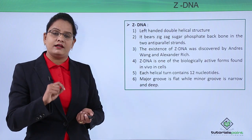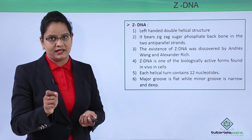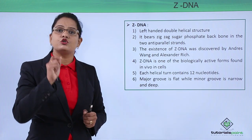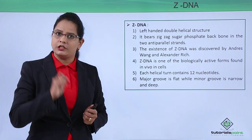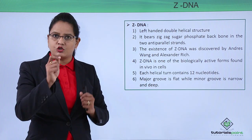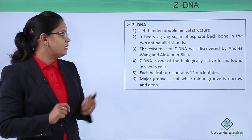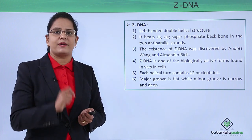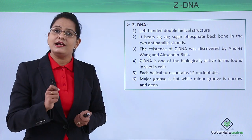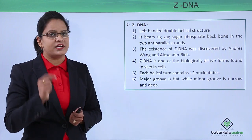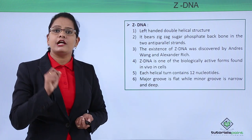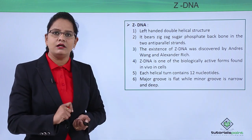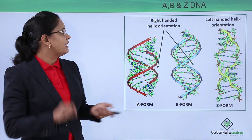Next is Z-DNA, which is a left-handed double helix — unlike the previous two which are right-handed. The sugar-phosphate backbone is zigzag in Z-DNA. This DNA was first discovered by Andres Wang and Alexander Rich. Z-DNA is found in in vivo conditions, making it a biologically active form. There are 12 nucleotides per turn, the major groove is comparatively flatter, and the minor groove is narrow and deep.